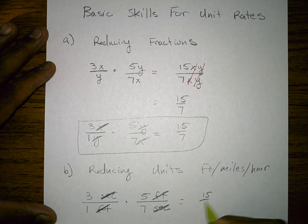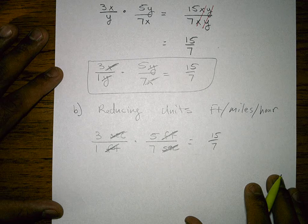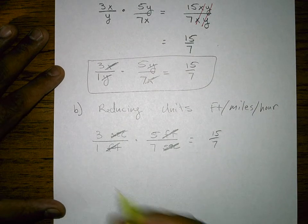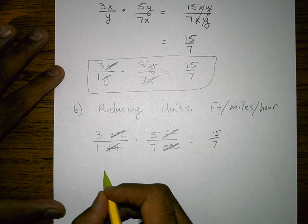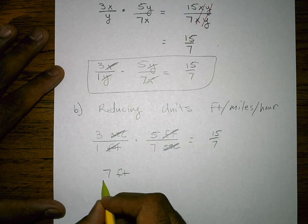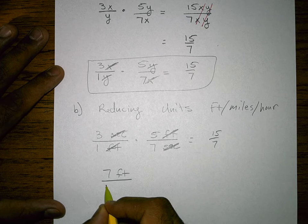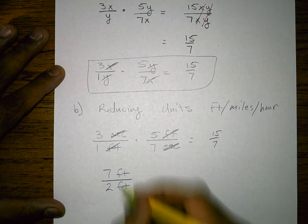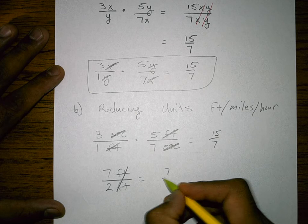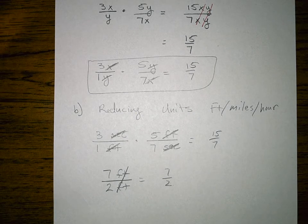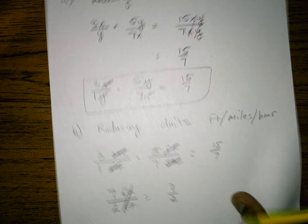So units reduce just like variables. So that would just be 15 over 7. So to give you another quick example of that, if I had something like just a fraction of 7 feet over 2 feet. Well, I've got a foot on top and a foot on the bottom. I can just cross those out. And that's 7 over 2. So they reduce just like variables. With those skills being put in place, let's go ahead and look at some examples here.